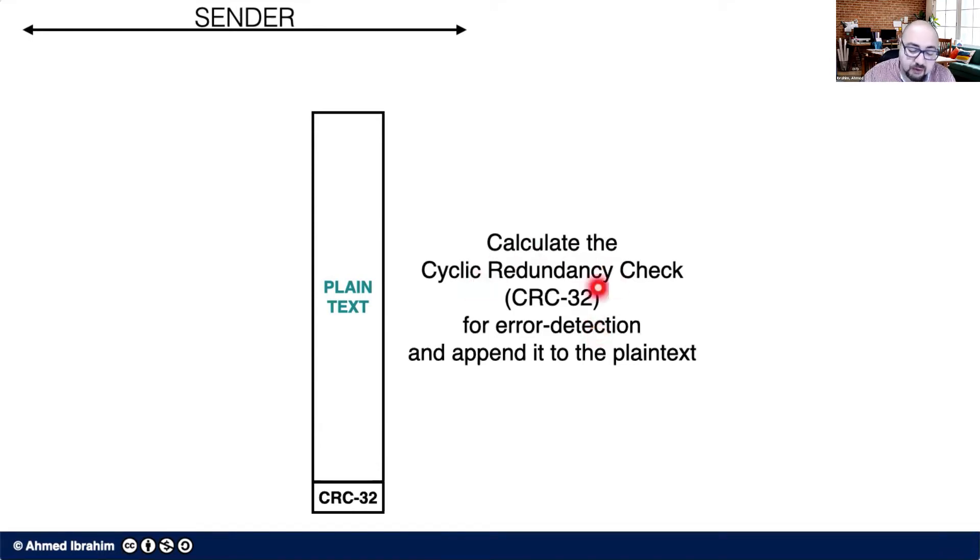So this value of CRC is calculated and appended to the plain text, such that when it arrives at the receiver, it can be checked for errors and the receiver can know if there are any errors in it while transmission. And after that,